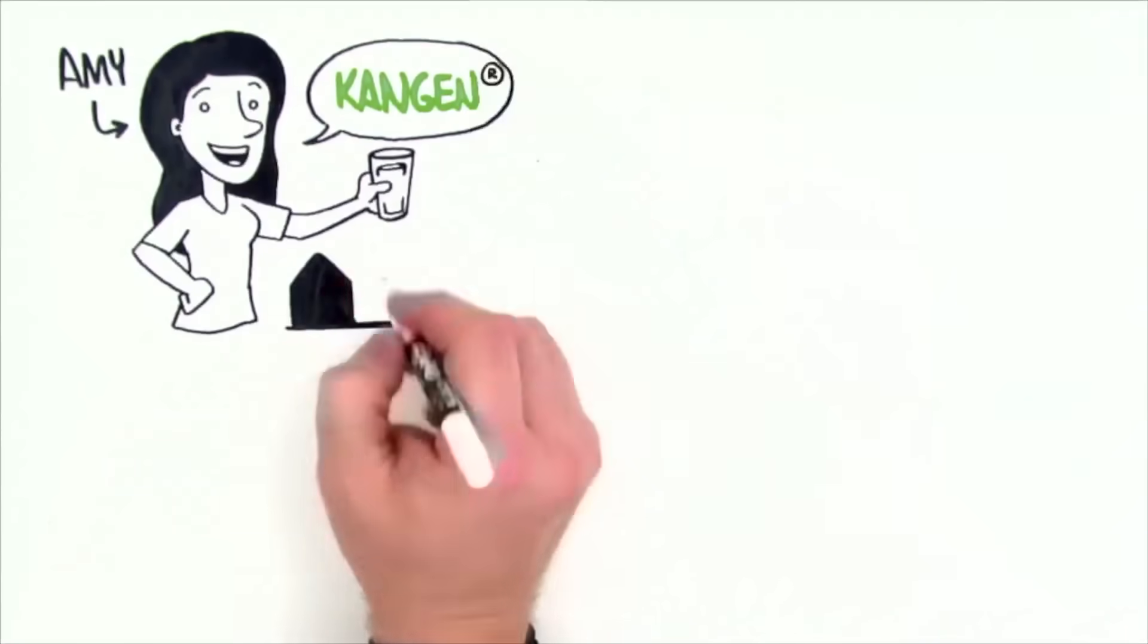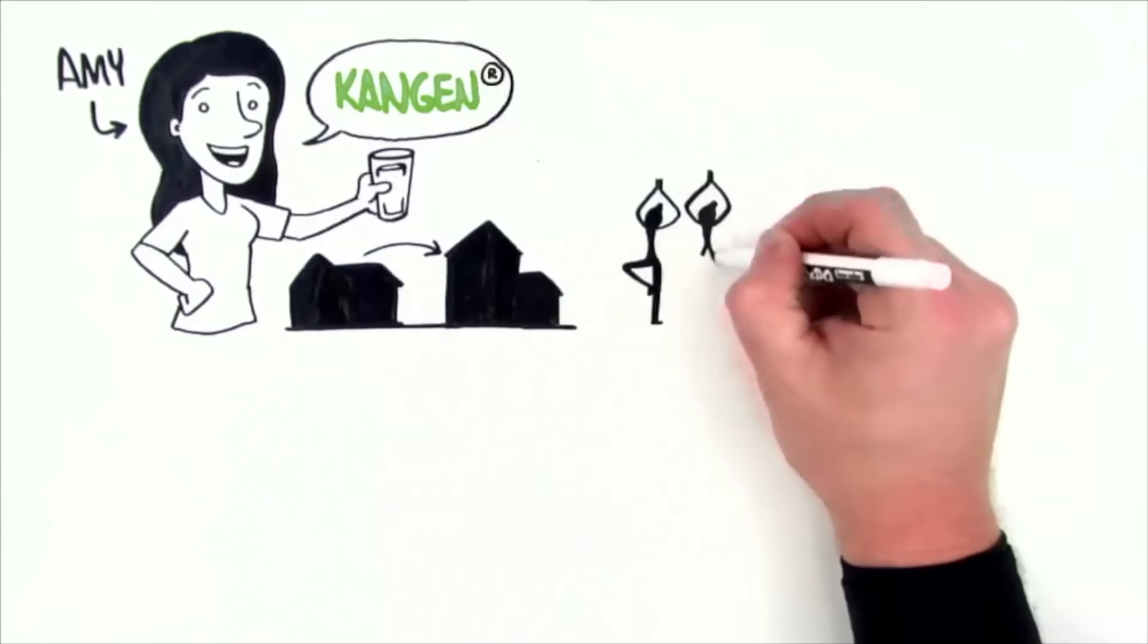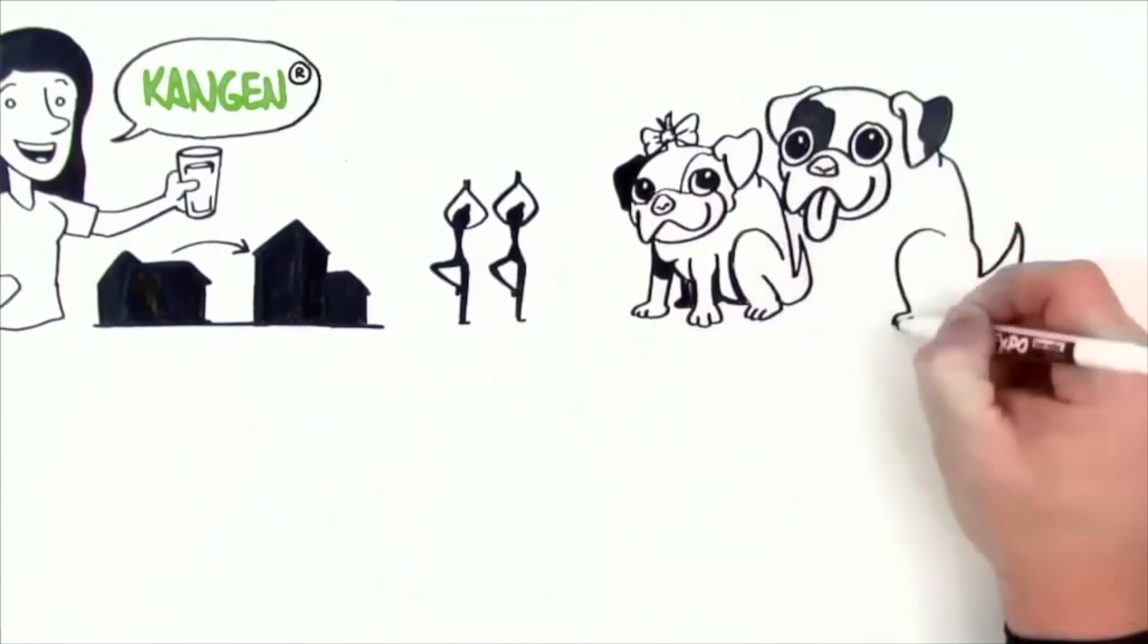So your friend told you about Kangen Water. Let's call her Amy. Amy lives down the street, goes to the same yoga class as you, or maybe you both have pugs.